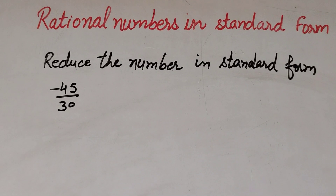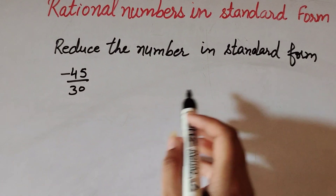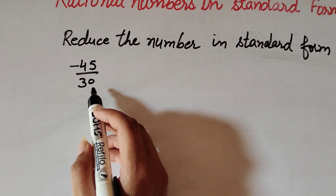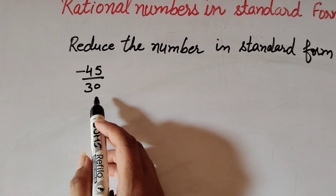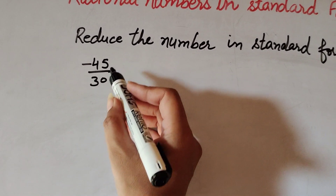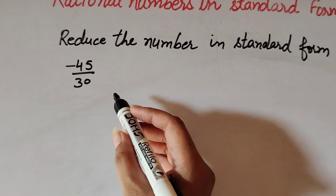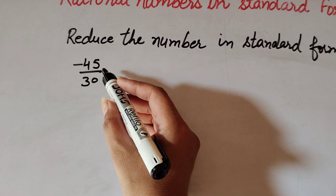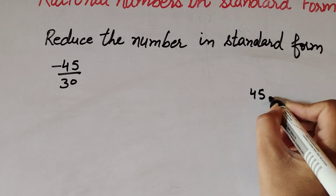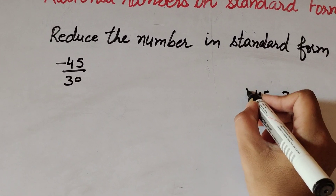Let's take some more examples and reduce numbers to standard form. We have the number -45/30. To find its standard form, we divide the numerator and denominator by the HCF. So we find the HCF using prime factorization.